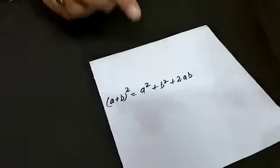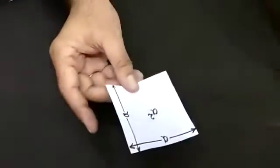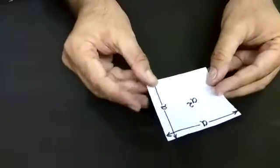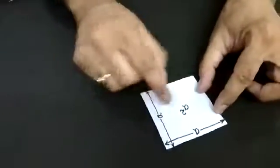We are going to understand the derivation with some concrete example. Suppose this square has the side a.